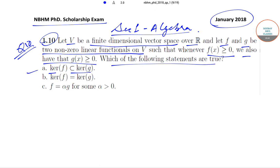Then which of the following statements are true? Option A: kernel of F is a proper subset of kernel of G. Option B: kernel of F is equal to kernel of G. Option C: F is equal to αG for some α greater than 0. These are the options.